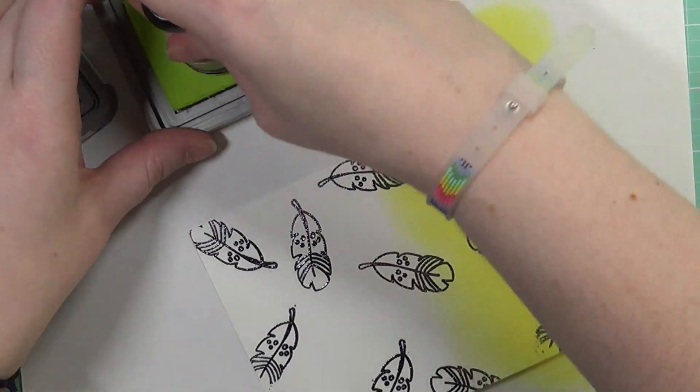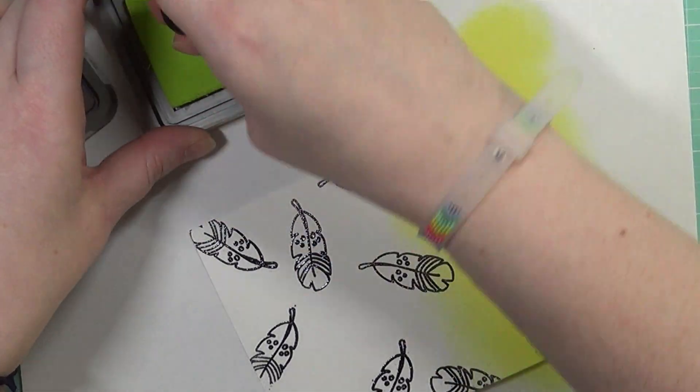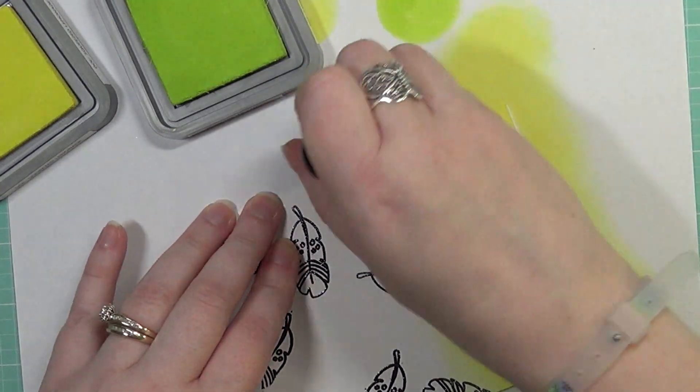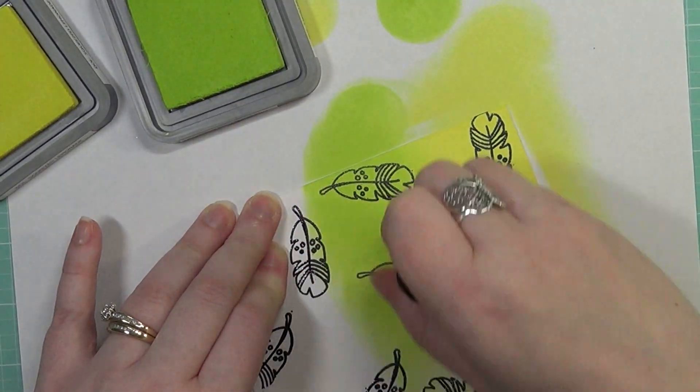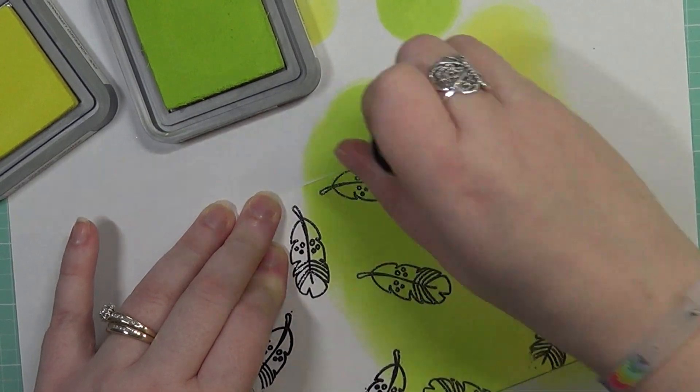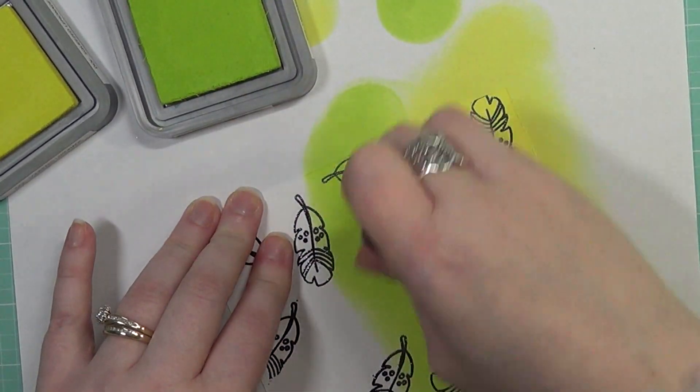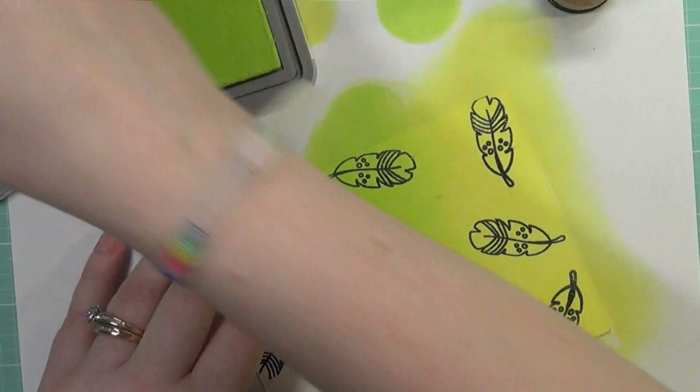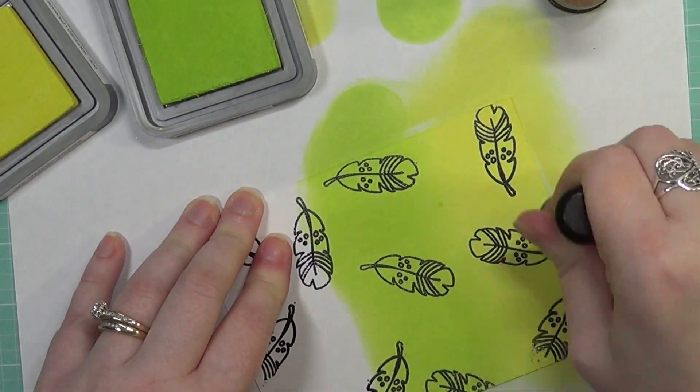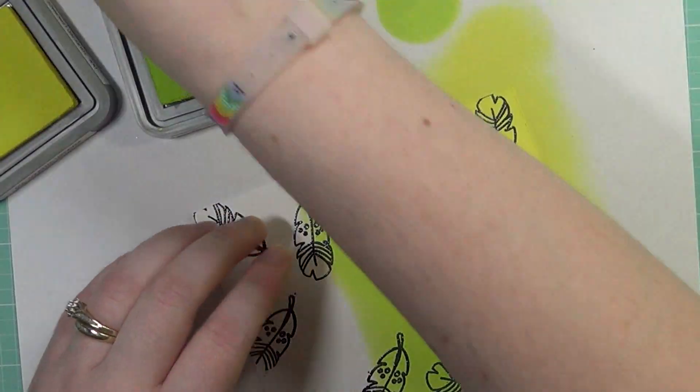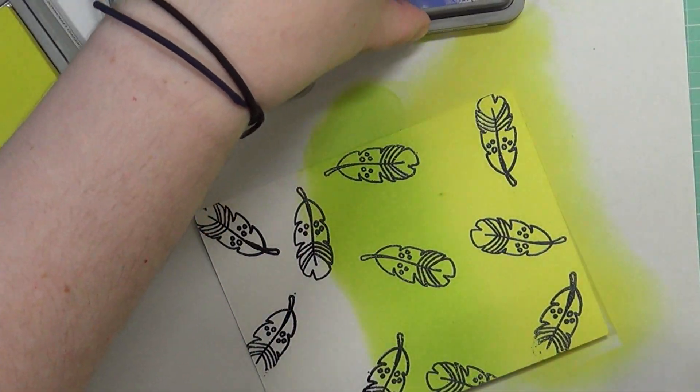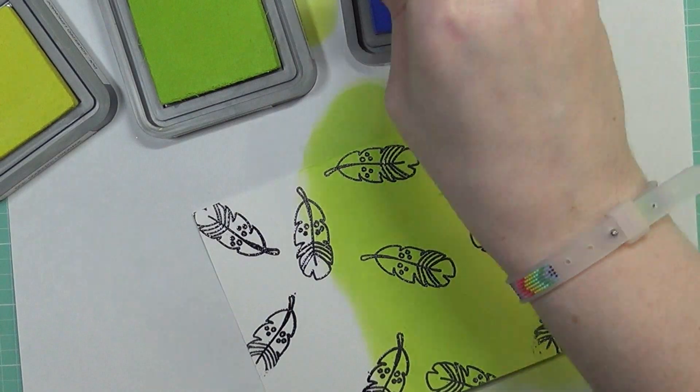The next color I'm going to use is the Twisted Citron color, and I'll get that ink really well on my sponge applicator tool. Once I get those two colors blended together, I'm going to use the Blueprint Sketch, which is one of my favorite colors of Distress ink altogether, whether it be in regular Distress inks or the Oxide inks. It's just a beautiful vibrant blue with a little bit of a purple tinge to it.